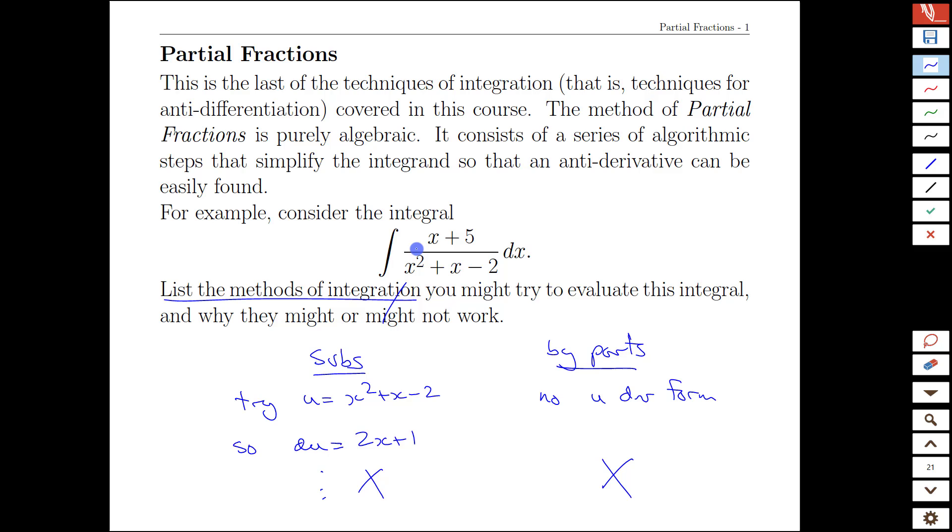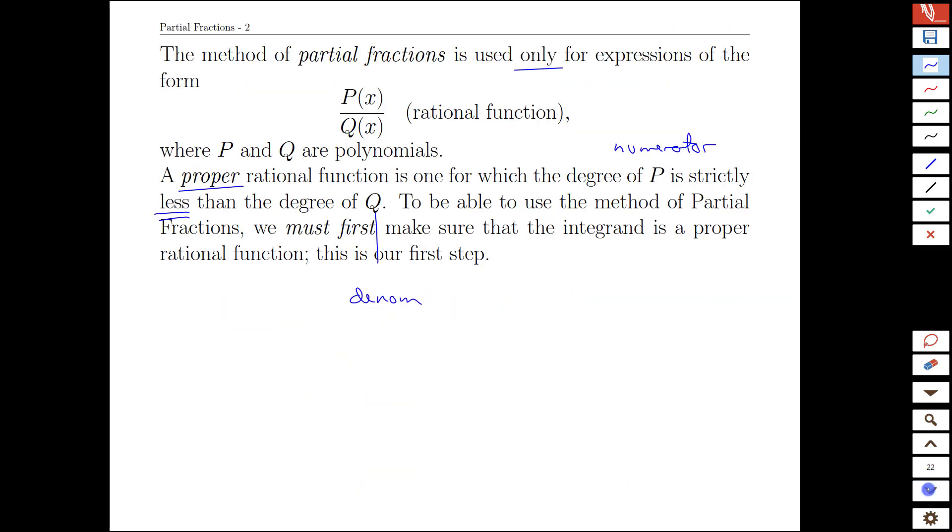For example, this last function here is a proper rational function. And it's proper because the degree in the top is 1, it's a linear term, the degree in the bottom is 2, it's quadratic, so the degree in the top is strictly smaller than the degree in the denominator.